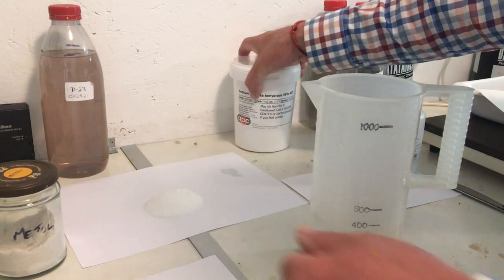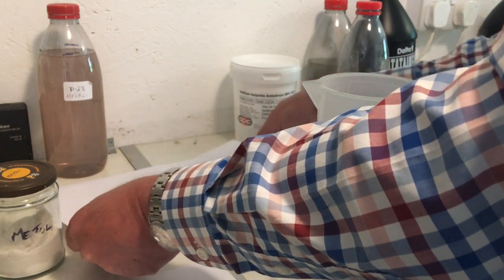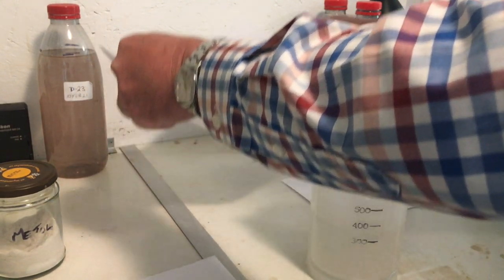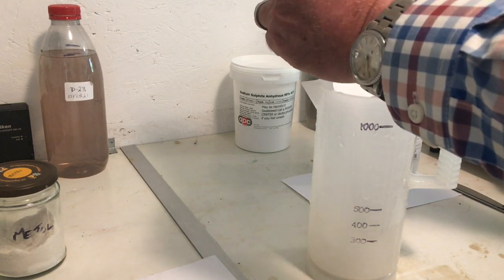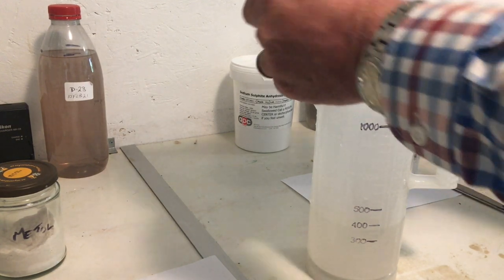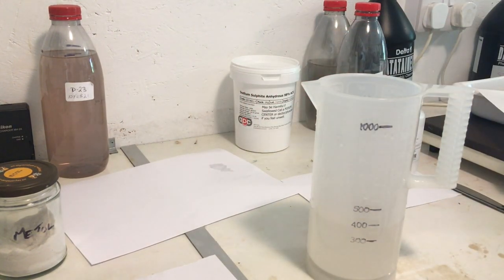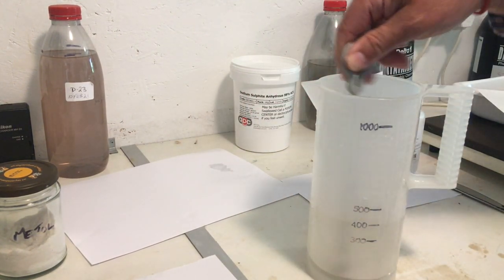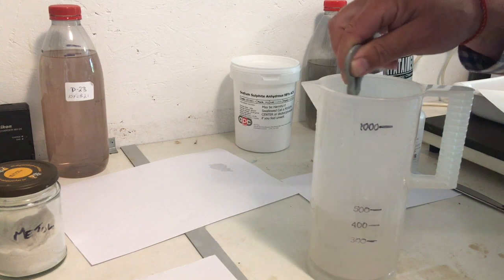The next one then. Let's get all our sodium sulfite in now. Now the reason I don't add all the sulfite before the metol—you'd think yeah why don't you just do that John, it would scavenge the oxygen and make it safe for the metol to dissolve—but actually metol won't dissolve if you've added all your sulfite first. That's why just a pinch at the beginning. So here we go, we get all this dissolved in next.